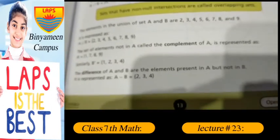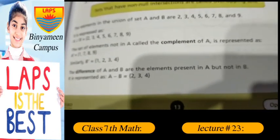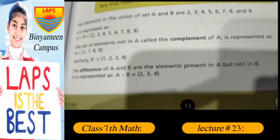The difference of set A and B are the elements present in A but not in B. So it is represented as A difference B: 2, 3, 4.